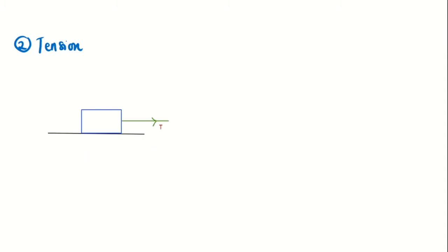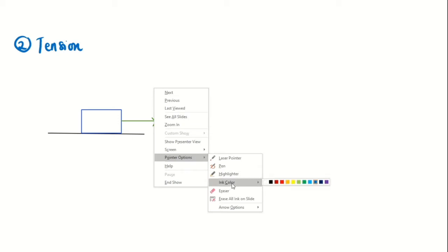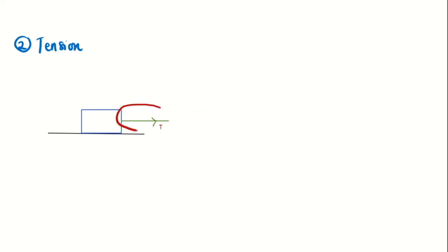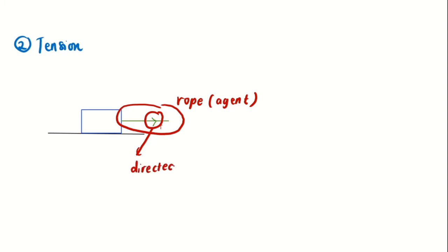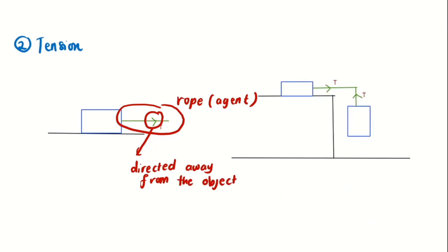For tension, remember the agents are rope, wire, and cable. Looking at the rope as the agent, tension must be drawn in the direction away from the object. If you have the same rope connecting objects, the tension value remains the same.